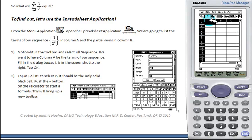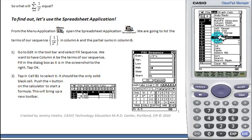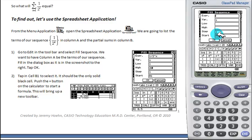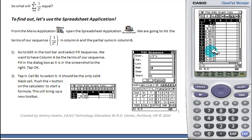We're going to fill in the terms of our sequence, 1 over 2 to the n, in column A. To do this, select Edit, select Fill Sequence, and we'll get this dialog box. We're going to fill in just as we have in the activity. Then we're going to tap OK, and it'll fill in the first 20 of our terms.